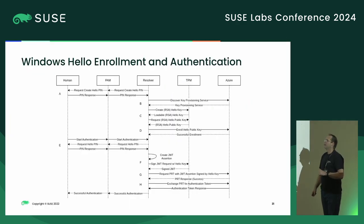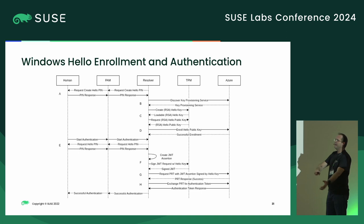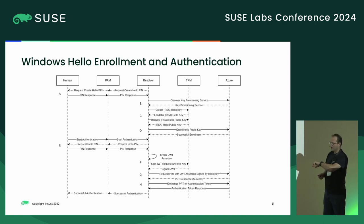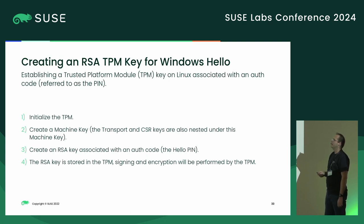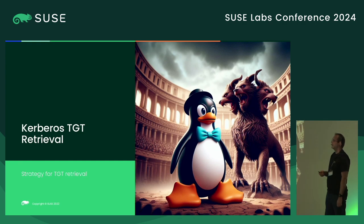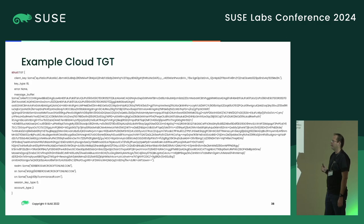Windows Hello is a complicated process. We're binding it to a PIN authentication code, but you can also bind it to a fingerprint — I haven't set that up yet. The PRT encapsulates the TGT, and we need to import those into the credential cache, which I haven't done yet.